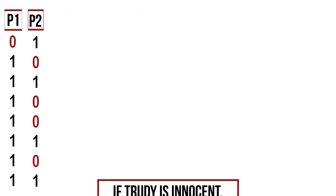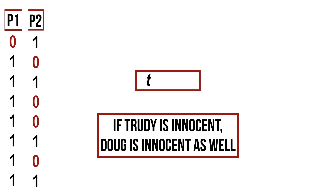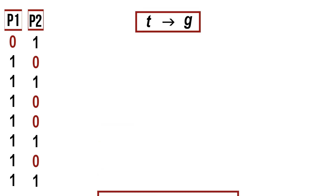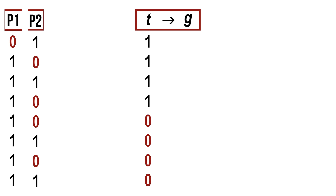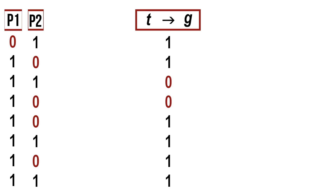The only other thing we know is that if Trudy is innocent, Doug is also innocent. Translating this into propositional logic: if Trudy is innocent, then Doug is innocent. We now evaluate this formula in all situations, assigning truth values to the atomic propositions in the same order as before, then evaluate the formula under the main connective.